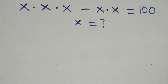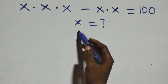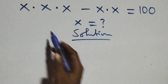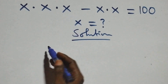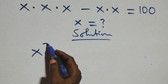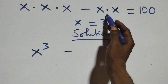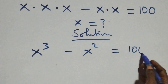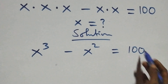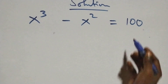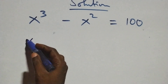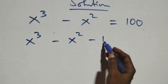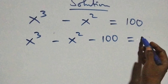Hello, you are welcome. Here we solve a nice algebraic equation. We can multiply directly: x times x times x gives x cubed, then minus x times x gives x squared, equals 100. We take 100 to the left-hand side, and this becomes x cubed minus x squared minus 100 equals zero.